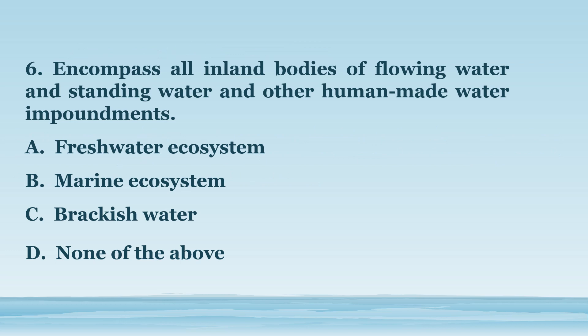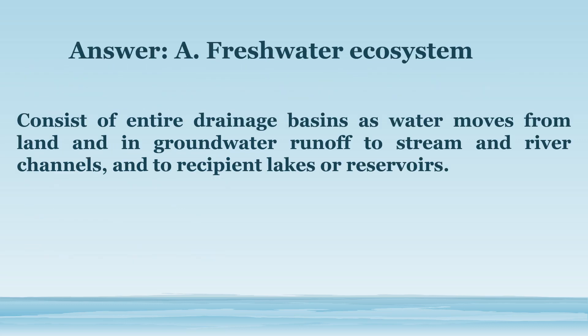Number 6. Encompasses all inland bodies of flowing water and standing water and other human-made water impoundments. A. Freshwater Ecosystem. B. Marine Ecosystem. C. Brackish Water. D. None of the above. The answer is letter A. Freshwater Ecosystem. Consists of entire drainage basins as water moves from land and in groundwater runoff, to stream and river channels, and to recipient lakes or reservoirs.